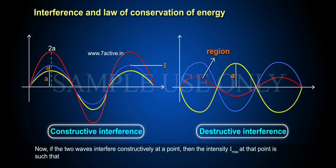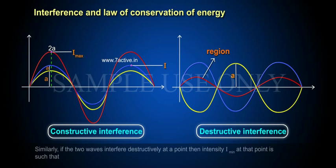Now, if the two waves interfere constructively at a point, then the intensity I maximum at that point is such that I maximum is directly proportional to (2A) squared, or I maximum equals 4A squared.